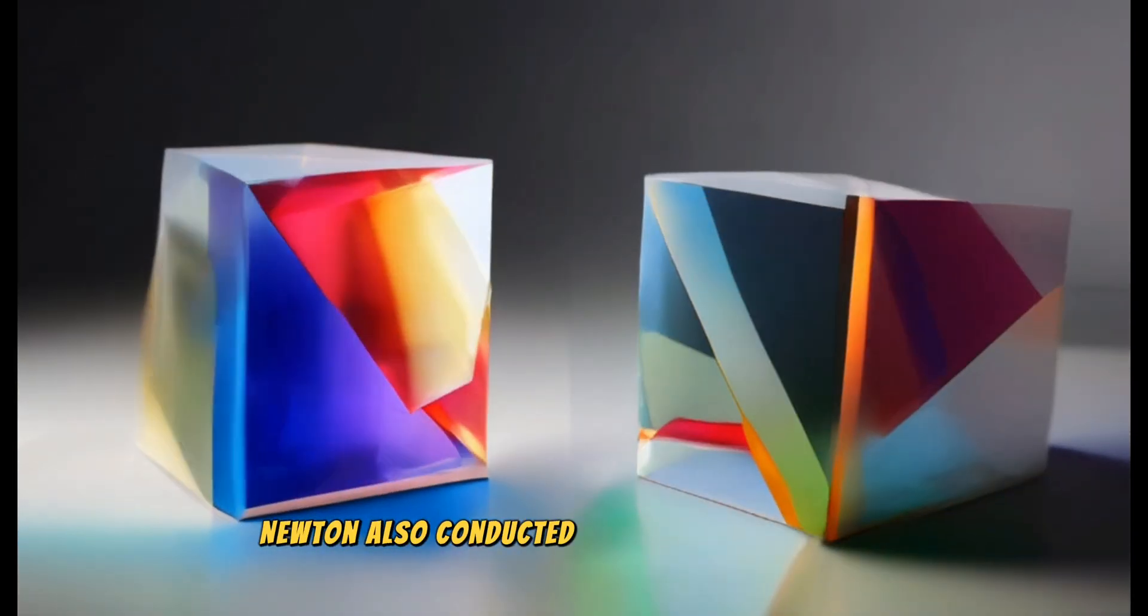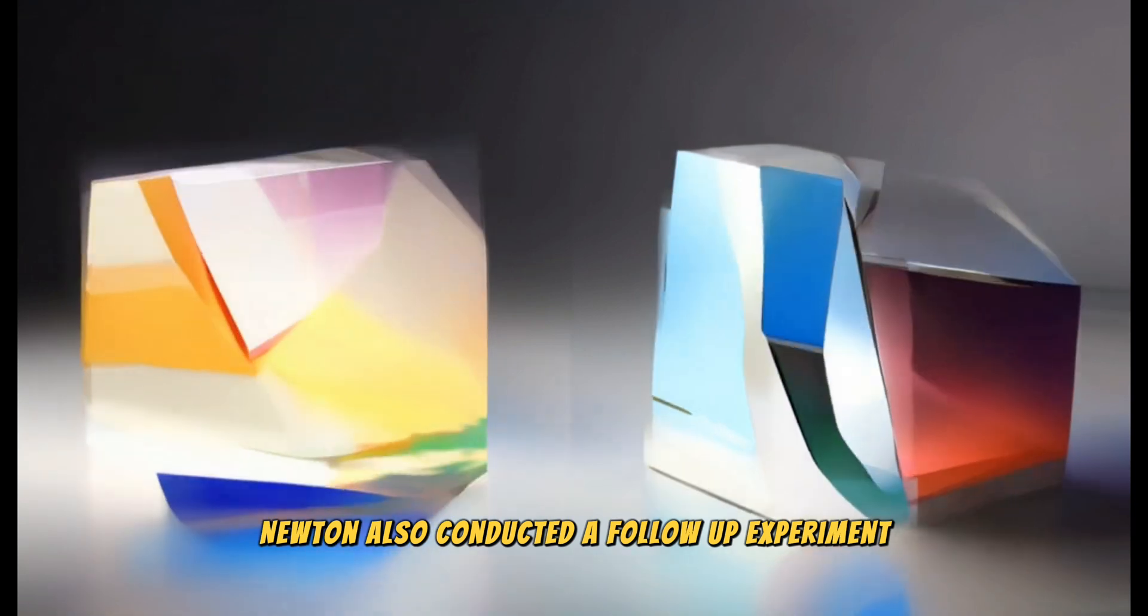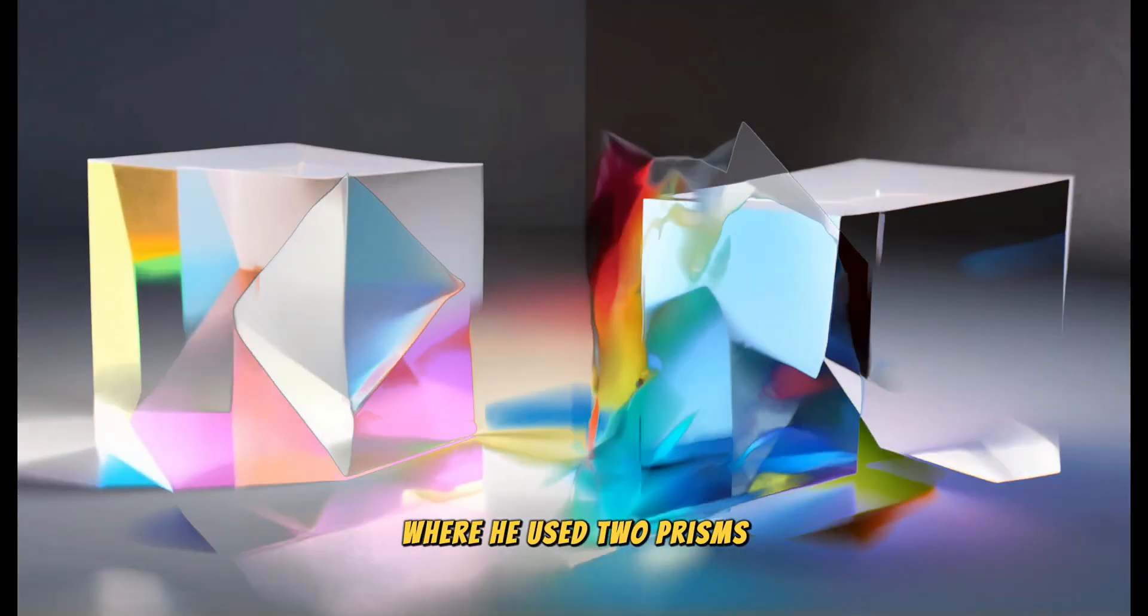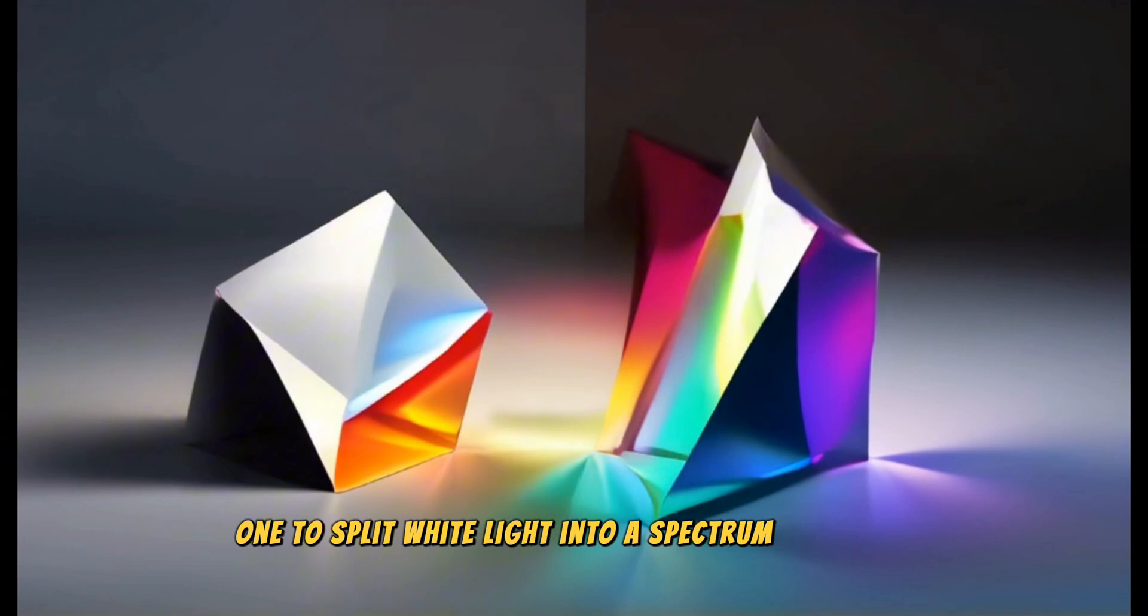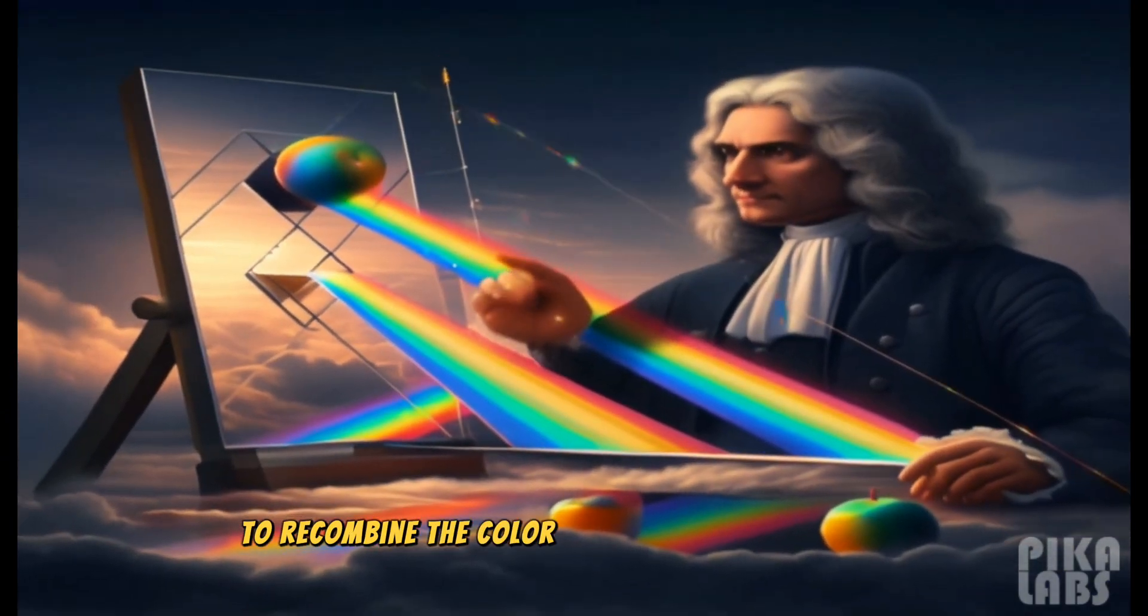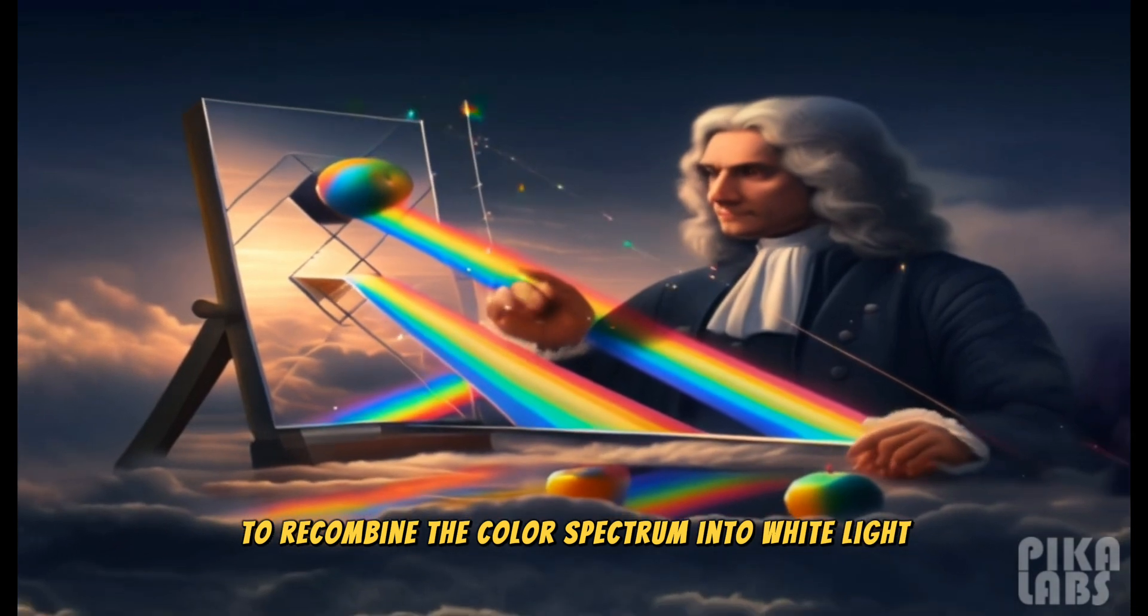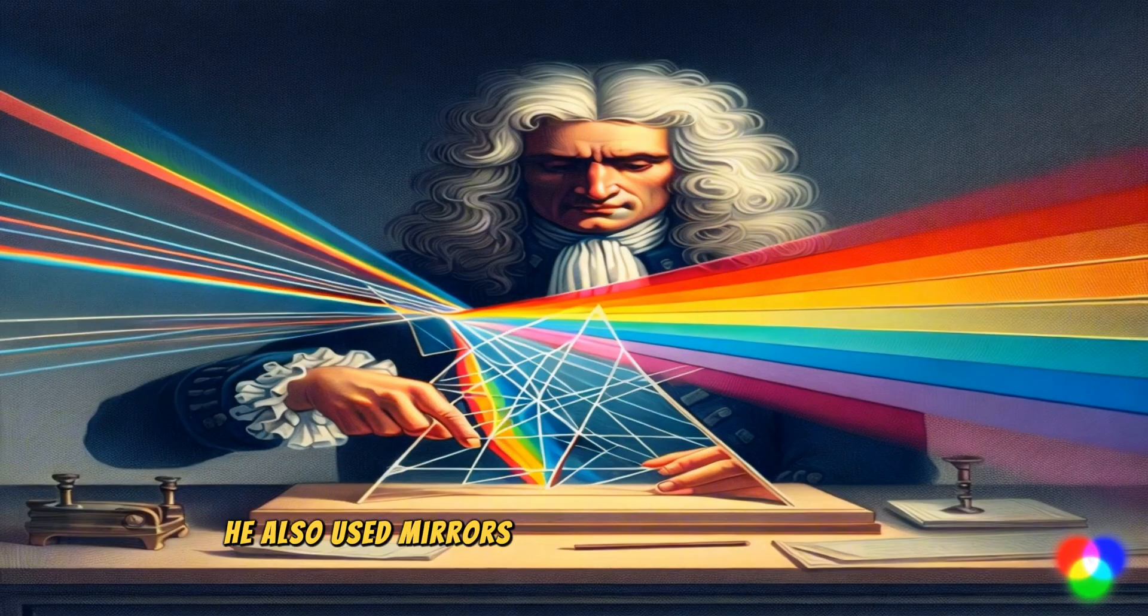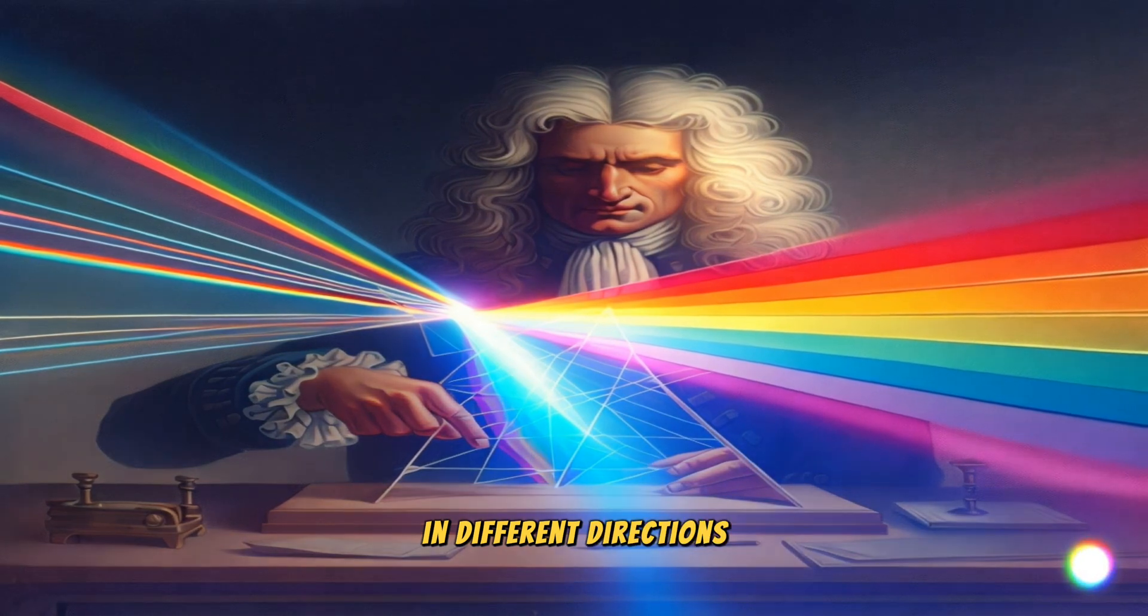Newton also conducted a follow-up experiment where he used two prisms, one to split white light into a spectrum of colors, and another to recombine the color spectrum into white light. He also used mirrors to reflect the color spectrum in different directions.